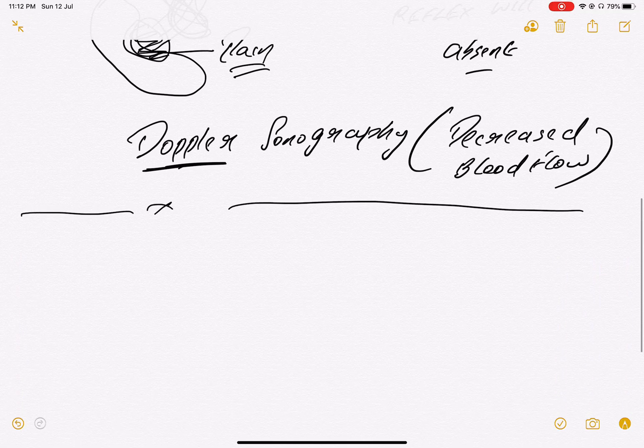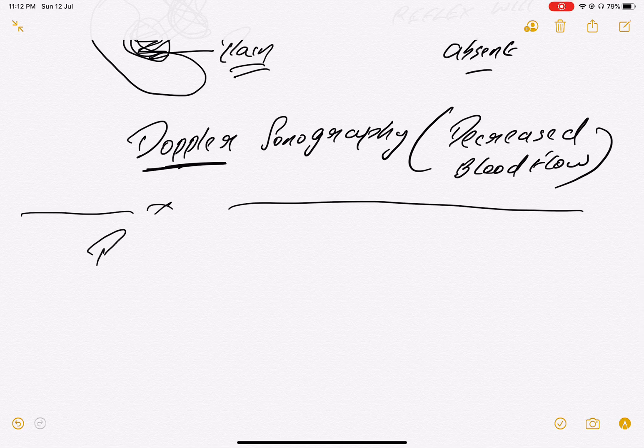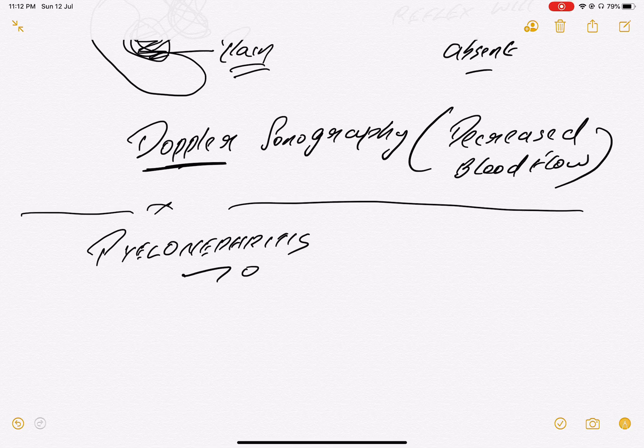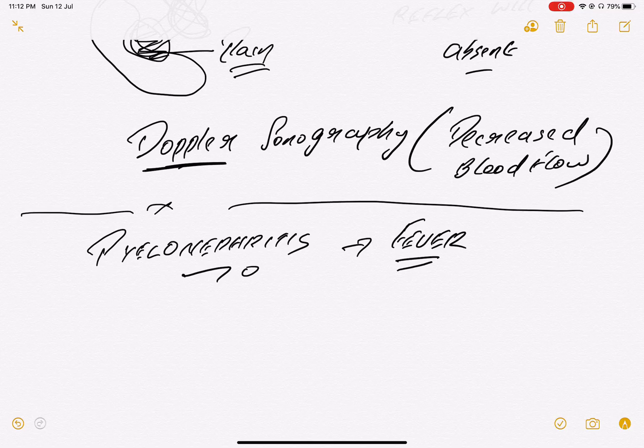Similar like this, right side of testicular pain can also occur in two more differentials I'm adding here. One is pyelonephritis. That is also very important. Pyelo means parenchyma of kidneys inflamed. The parenchyma of kidneys inflamed. Then also you can have right-side testicular pain, but sure in the question, without fever there is no pyelonephritis.